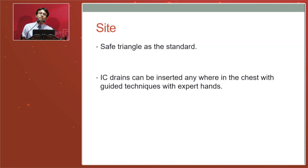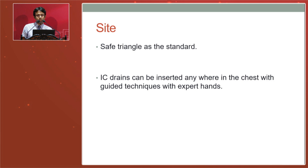Regarding site of insertion, the safe triangle is the standard site, bounded by the lateral border of pectoralis major, the anterior border of latissimus dorsi, and in line with the fourth or fifth intercostal space. Even though this is the standard place called the safe triangle, we can put an IC tube at any place, but you have to have a proper understanding of anatomy. Sometimes we put IC drains ultrasound-guided, CT-guided, or with the radiological team marking a specific place. In general surgical practice, the best place is the safe triangle.